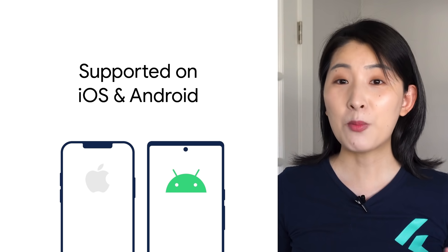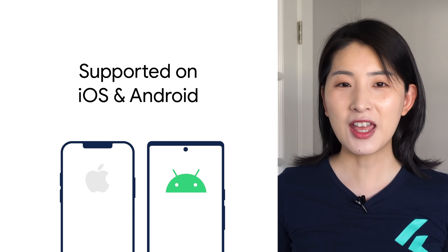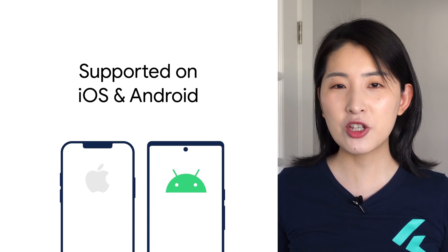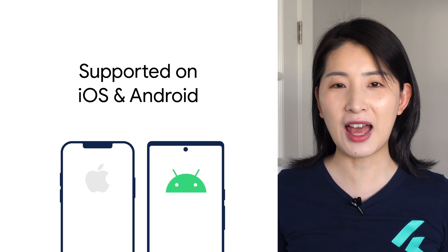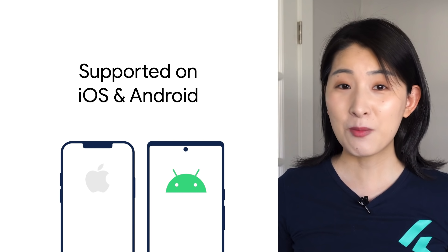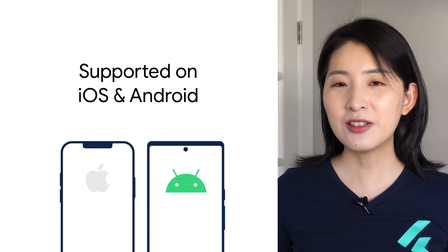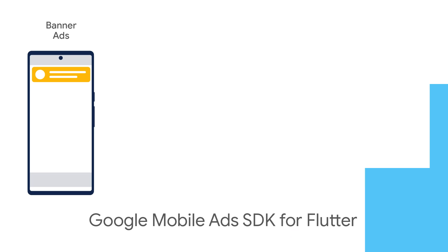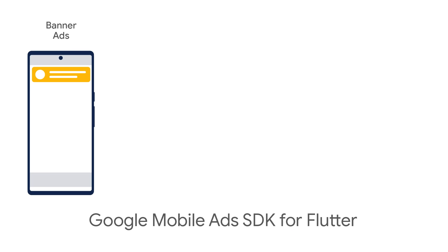The plugin works on both iOS and Android and supports loading and displaying all GMA SDK ad formats. Ads can be used in a lot of different ways in your app. For example, banner ads — usually a rectangle ad that occupies a spot within an app's layout, either at the top or bottom of the device screen.